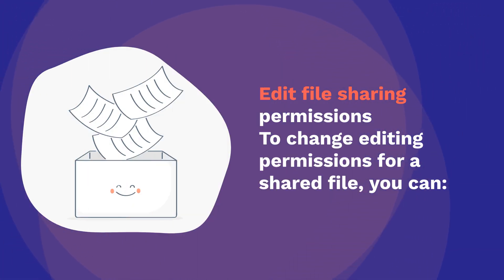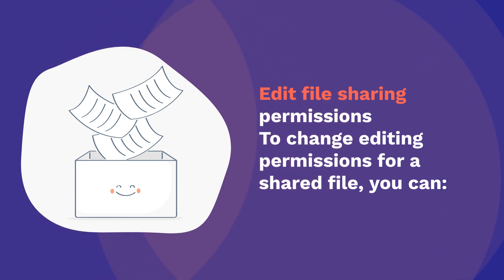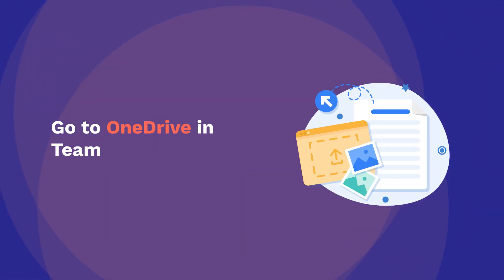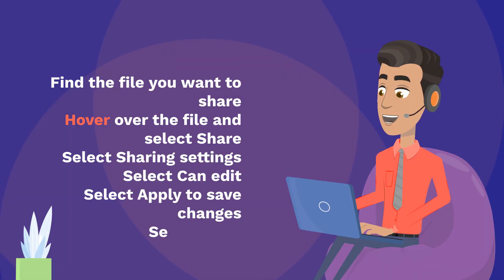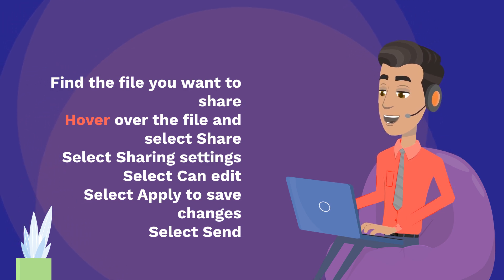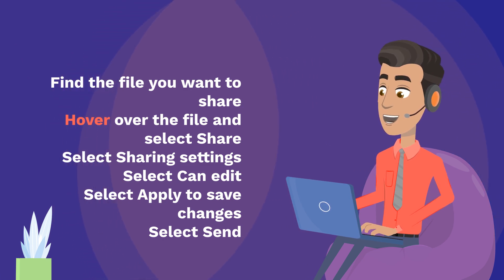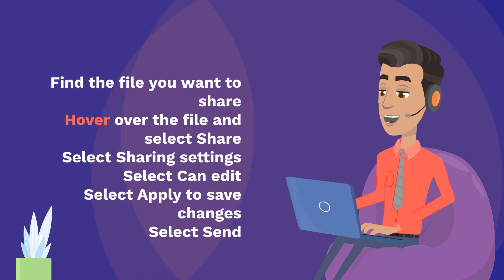Edit File Sharing Permissions: To change editing permissions for a shared file, go to OneDrive in Teams. Find the file you want to share, hover over the file and select Share, select Sharing Settings, select Can Edit, and select Apply to save changes. Then select Send. Thank you.